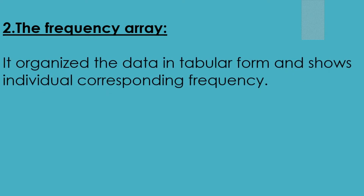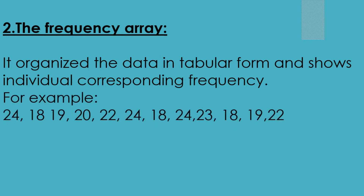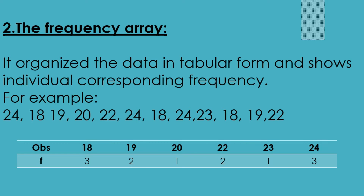The second method is the frequency array. In a frequency array, data is organized in tabular form and shows the individual values with their corresponding frequencies. For example, 18 comes three times so its frequency is 3; 19 comes two times so frequency is 2; 20 comes one time; 22 comes two times; 23 comes one time; and 24 comes three times.